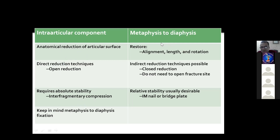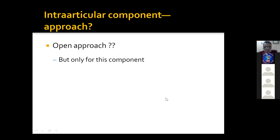For the metaphysis-to-diaphysis fixation, our aim is to restore alignment, length, and rotation. This we can do by using indirect reduction techniques — that is, closed reduction; we don't need to open the fracture site. This component of the fracture can be and should be treated by relative stability using an intramedullary nail or a bridge plate.